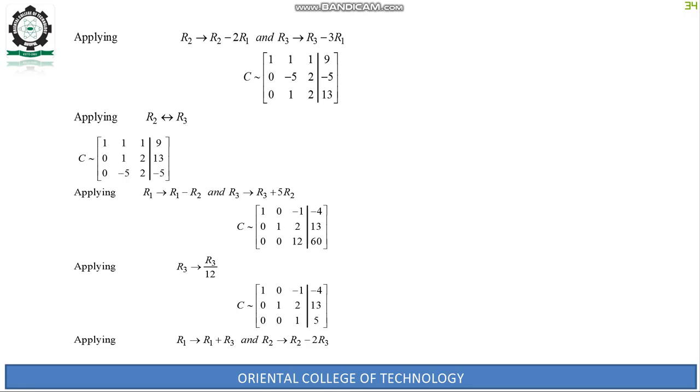Apply R3 → R3/12. C becomes: 1, 0, -1, -4; 0, 1, 2, 13; 0, 0, 1, 5.